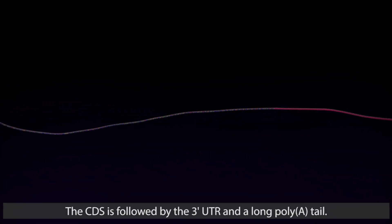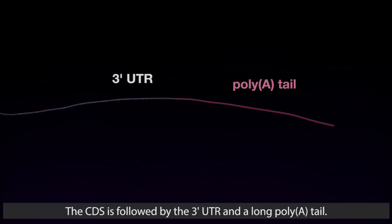The CDS is followed by the 3' UTR and a long poly(A) tail.